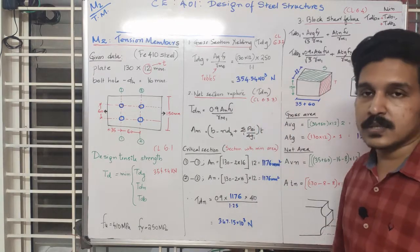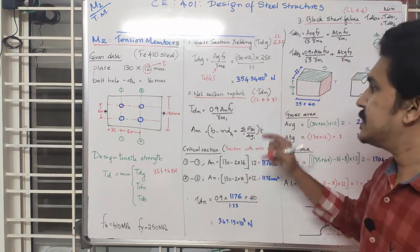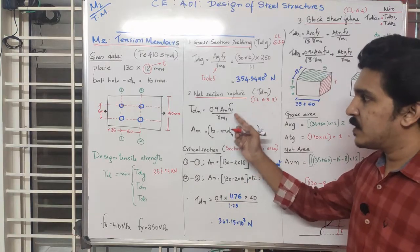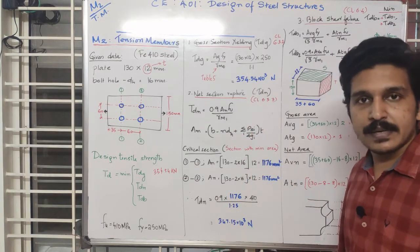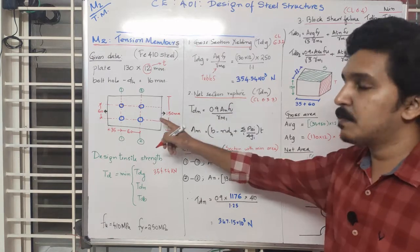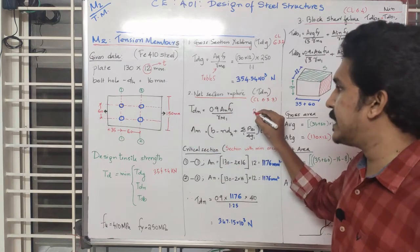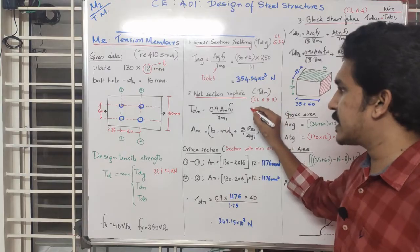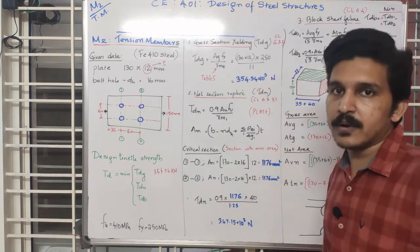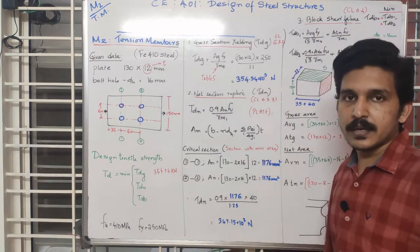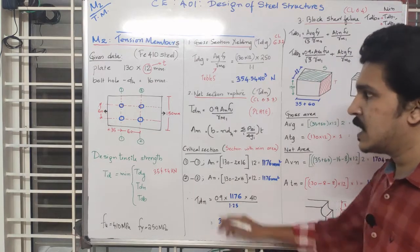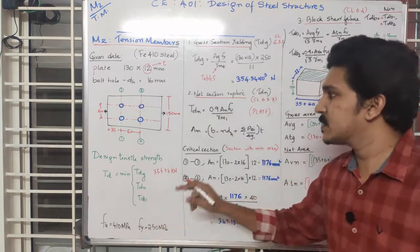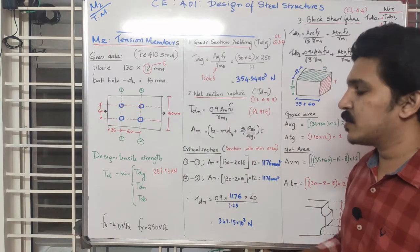The TDN equation is 0.9 times An times FU divided by gamma M1. This is the equation for a plate. FU is 410 MPa and gamma M1 is 1.25 from table 5. An is the net area, which equals the gross area minus the bolt hole area.